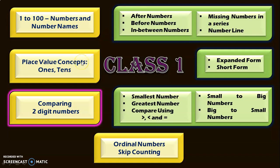In the third video, the learning outcome for Class 1 was place value concepts. We saw in detail about the ones place and tens place in that video. And now, in this video, we are going to see the learning outcome: comparing two-digit numbers. Before going into the details, it is very important to watch the videos related to numbers and number names, the activities related to this topic, and also the place value concept videos. Only if these things are very clear can children go ahead with the topic of comparing two-digit numbers.